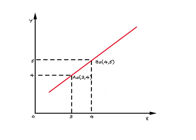Let us revisit the diagram I drew earlier. We had point A at (3, 4) and point B at (4, 5), and when we join them we get this line. What we find is: when you increase X by one unit from 3 to 4, Y also increases by one unit from 4 to 5.